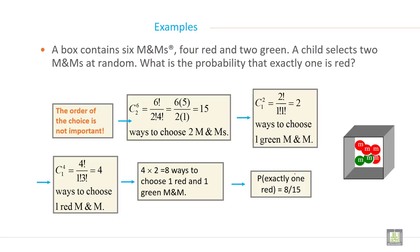So the order of choice is not important. C6,2 equals 6 factorial divided by 2 factorial into 4 factorial, equals 15 ways to choose 2 M&M balls. So C2,1 equals 2 factorial divided by 1 into 1 factorial, so it is 2 ways to choose 1 green M&M ball. And C4,1 ways to choose 1 red M&M ball. 4 into 2 equals 8 ways to choose 1 red and 1 green M&M ball. So probability of exactly 1 red equals 8 by 15.